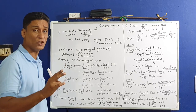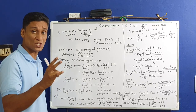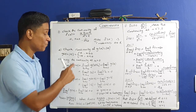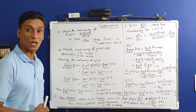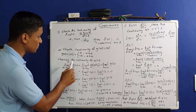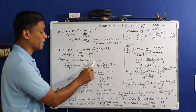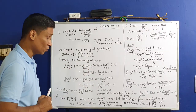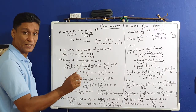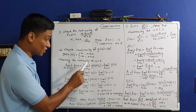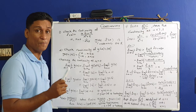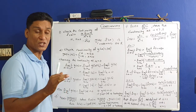We need to check the continuity of |x| only at x = 0. At all other points the function g(x) = |x| is clearly continuous. To check the continuity at x = 0, we have three conditions: left limit, right limit, and functional value at 0.